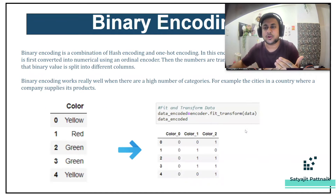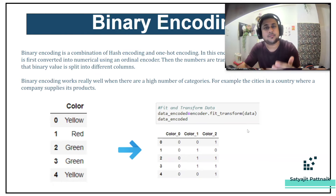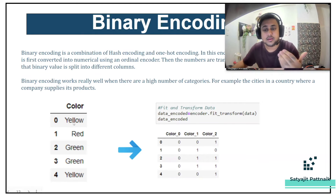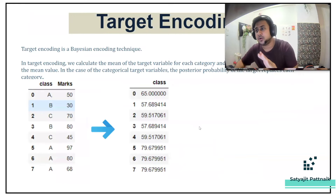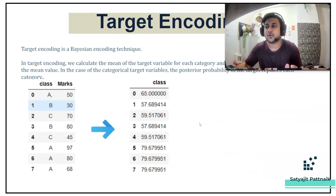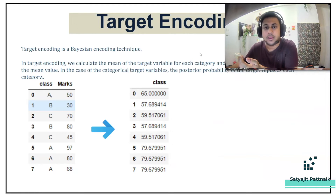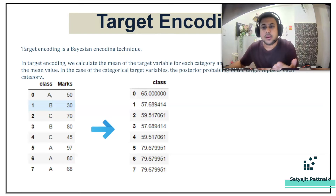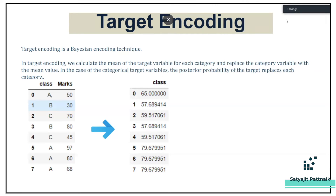Binary encoding is a combination of hash encoding and one-hot encoding, and works really well when there are a high number of categories. For example, for city colors like yellow, red, green, applying binary encoding using the fit-transform method produces output in binary format. Target encoding is a Bayesian encoding technique where we calculate the mean of the target value for each category and replace the categorical variable with that mean. For categorical target variables, the posterior probability of the target replaces each category.